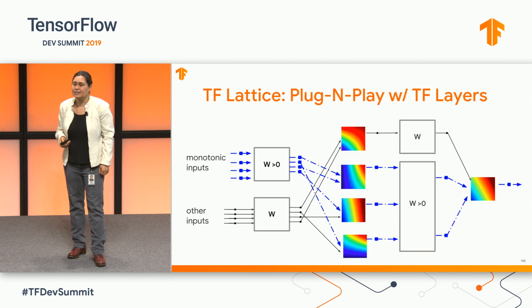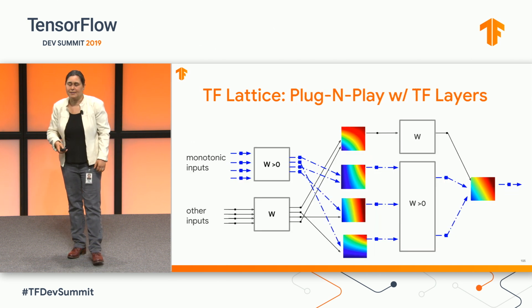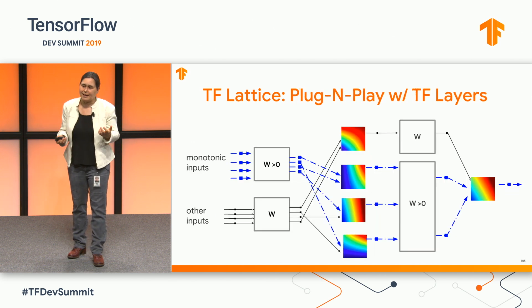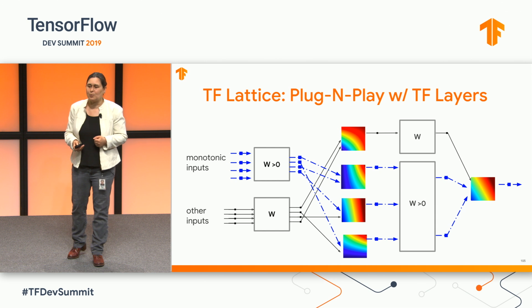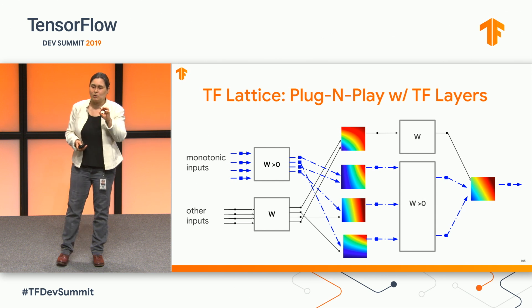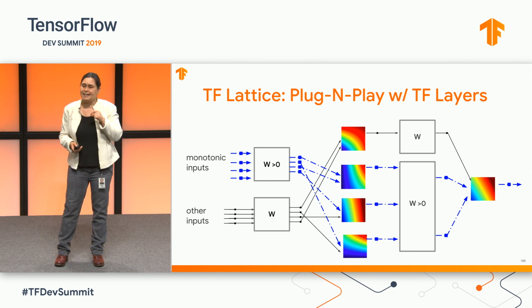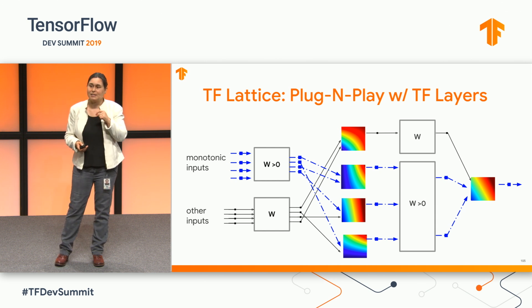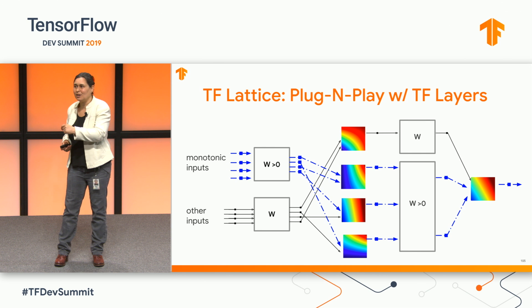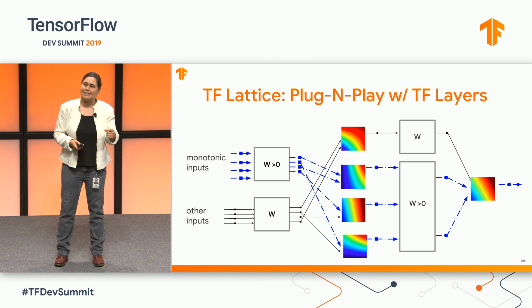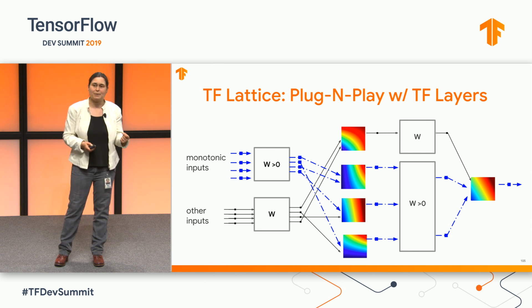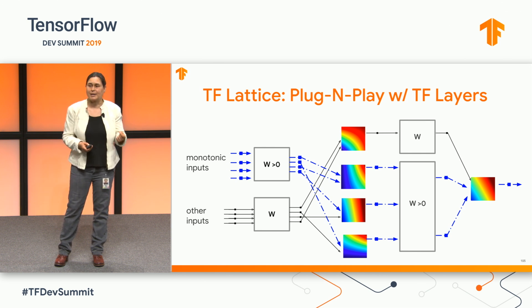Here's an example of a five-layer deep lattice network where the squares are these 1D calibrators. With the launch of TF Lattice 2.0, coming out in a month or two, we'll also support Keras layers.